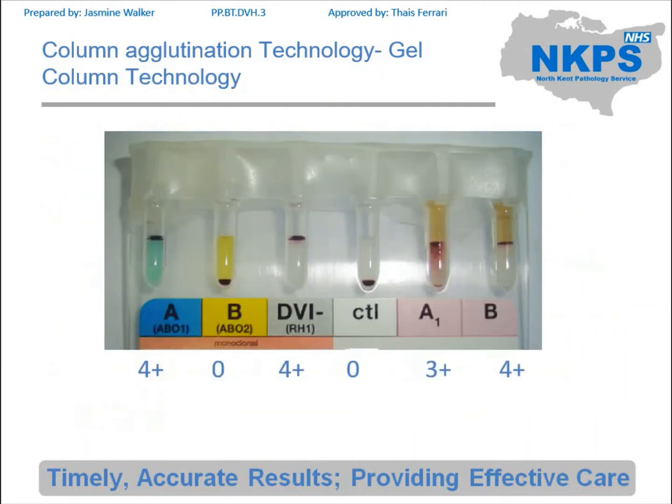An example of this you can see here. With the A you've got a strongly positive reaction — we would grade that as a four plus. The B had no reaction so that's dropped to the bottom. The one here that is not a strong reaction — you can see there is a reaction in the A1 — although it has a line at the top it has started to fall down and there is actually a line at the bottom. So this could be interpreted as a dual population result, which is really important that with this technology you're able to see.